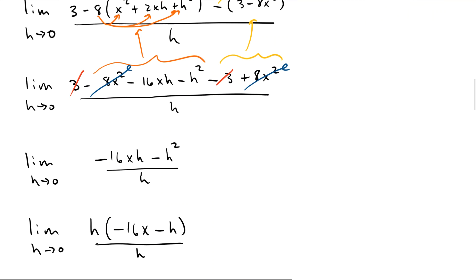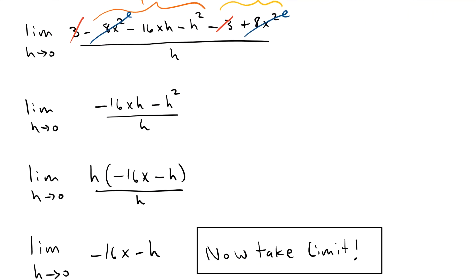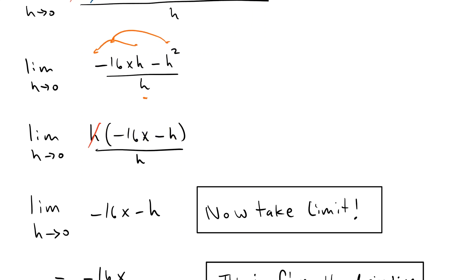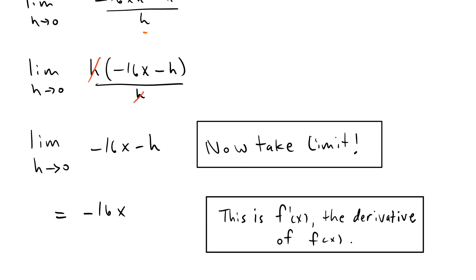So we notice at this point that each of the terms has an h in the top and the bottom. So we can factor that h out and we get h multiplied by the quantity negative 16x minus h. Now we can cancel the h's and we can take the limit.